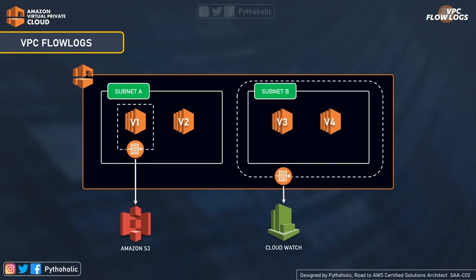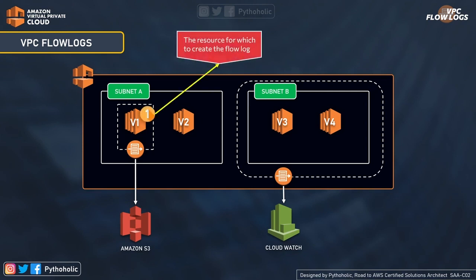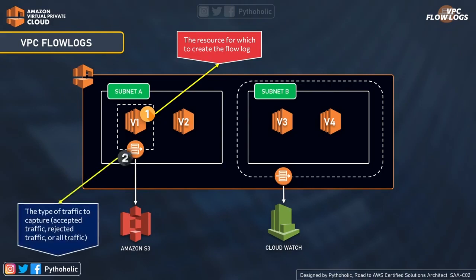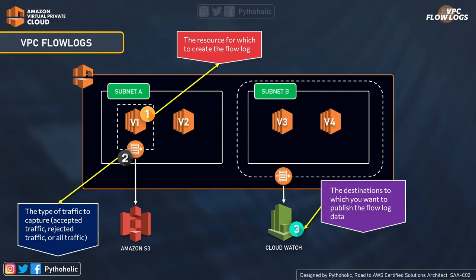When you think of a log, any event that occurs in these entities will generate entries containing information about what exactly happened — that entry is called a log. The flow log data for a monitored network interface is referred to as flow log records. To publish logs, keep three steps in mind: first, the resource for which to create the flow log (instance, subnet, or VPC); second, the type of traffic to capture (accepted, rejected, or all traffic); and third, the destination to which you want to publish the flow log data — either an S3 file or a CloudWatch log stream.